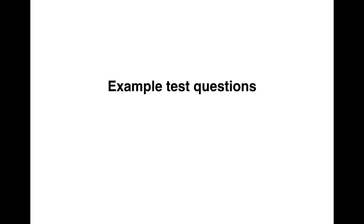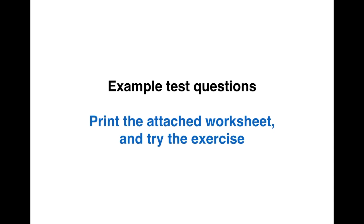Now let's go to today's example test questions. Print the attached worksheet and try the exercise — I'm going to go through the answers now, so if you haven't done the questions already, it won't make as much sense and you won't learn as much. The first thing to do in an IELTS reading test is read the title. The title of this one is 'The Development of Sanitation Systems.' Sanitation is about dealing with waste water in a place.